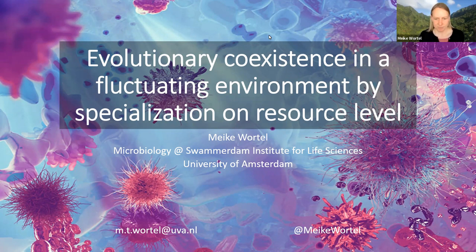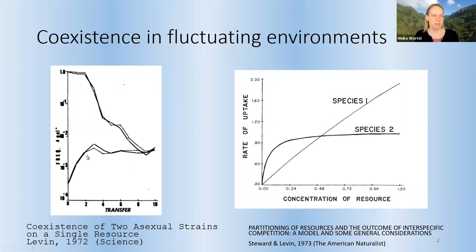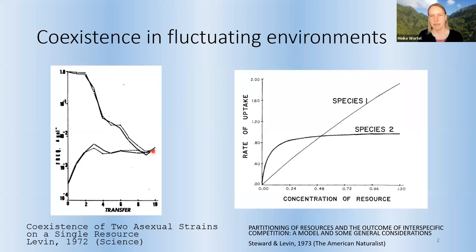This goes back to some experiments from the 70s and 80s. Bruce Levin had two clones in the lab. On the y-axis you can see the frequency of both clones, and on the x-axis the transfer. Every time the nutrients were depleted, the clones were transferred to a new environment. He saw that irrespective of the frequency he started at — he started at two different frequencies — he would end up at a stable frequency after all these transfers. Because every transfer the nutrients are depleted, we get a fluctuating environment.